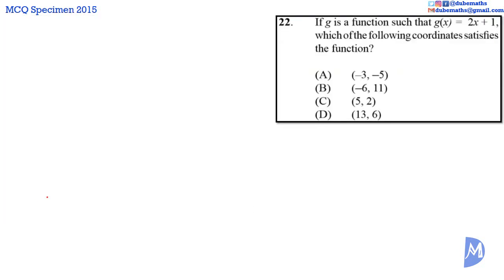Question 22. g(x) = 2x + 1. The coordinate that satisfies this function will produce the second element of the ordered pair when we substitute the first element in place of x in g(x). Starting with option A,